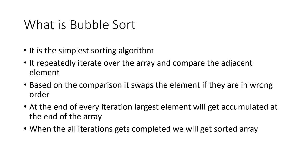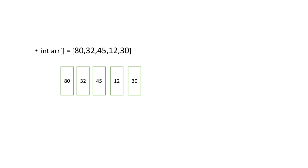So what is bubble sort? It is a simple sorting algorithm that repeatedly iterates over the array and compares adjacent elements. Based on this comparison, it swaps the elements if they are in the wrong order. At the end of every iteration we get the largest element at the end of the array. So at the end of the first iteration we get the largest element, at the end of the second iteration we get the second largest element, and so on — when all iterations complete we get the sorted array.